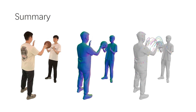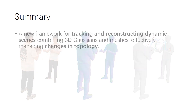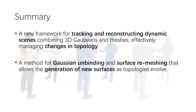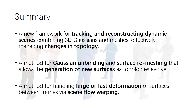In summary, with G-star we contribute a new framework for tracking and reconstructing dynamic scenes combining 3D Gaussians and meshes, effectively managing changes in topology. A method for Gaussian unbinding and surface re-meshing that allows the generation of new surfaces as topologies evolve. A method for handling large or fast deformation of surfaces between frames via scene flow warping. Please refer to our paper for more technical details. Thank you for watching.